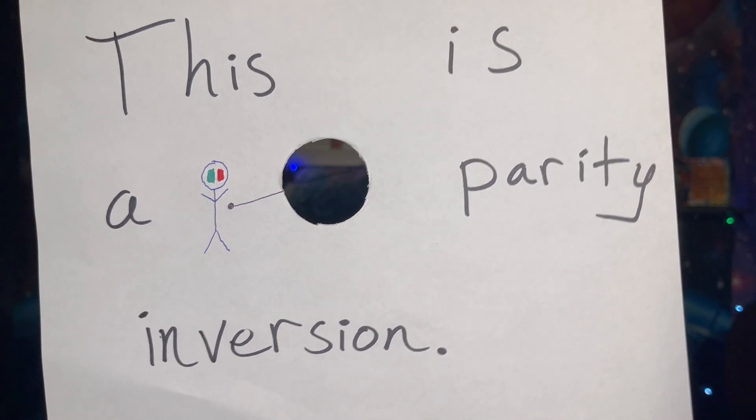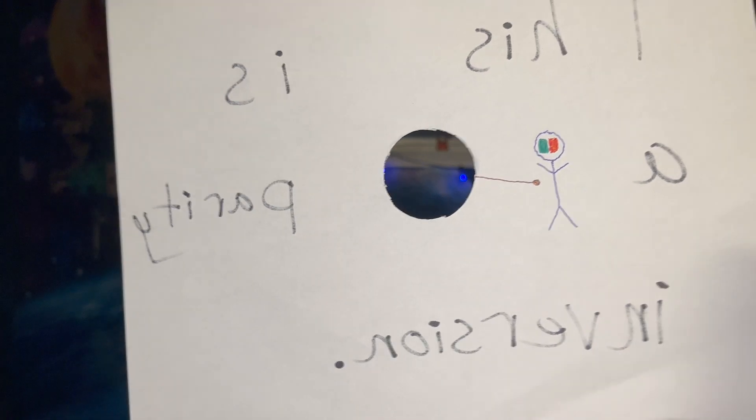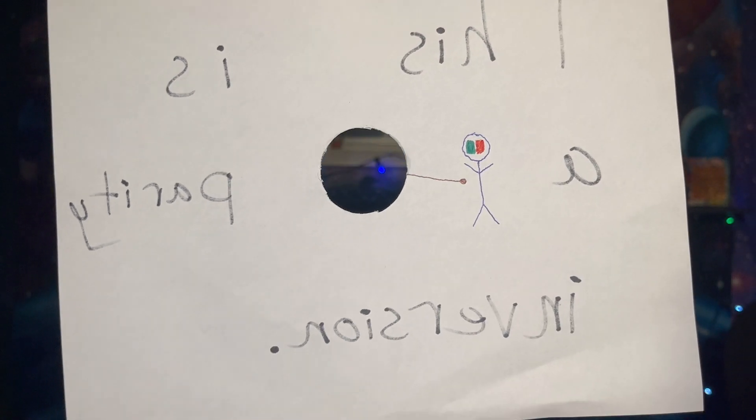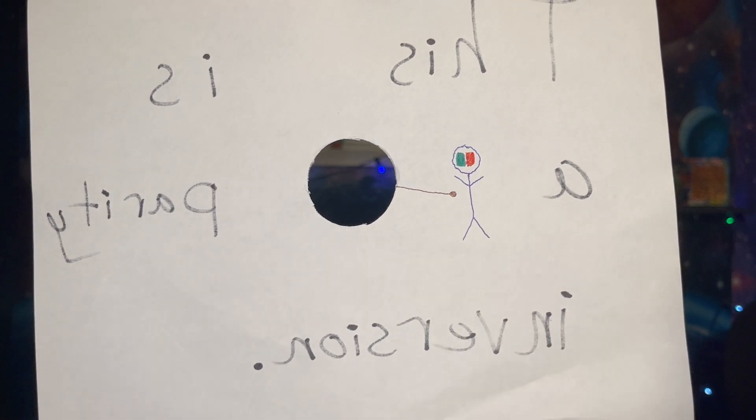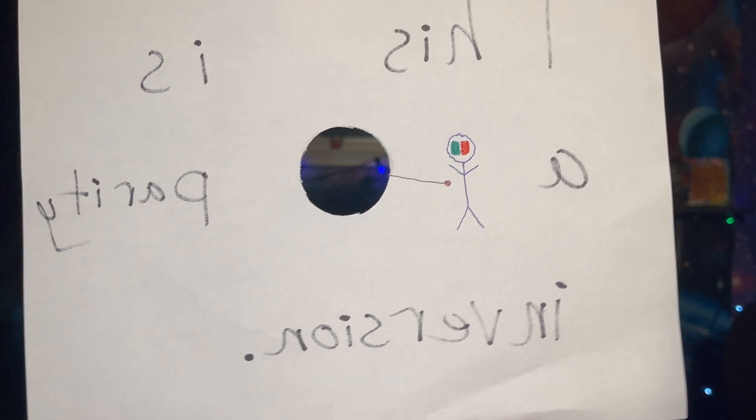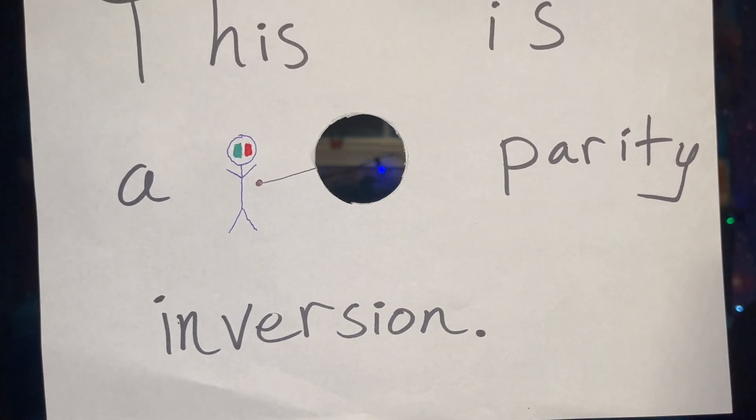If this two-dimensional observer's path takes them through the hole to the other side, everything from the side they just came from is now mirrored. In technical terms, a parity inversion has occurred. Notice the A is on the right side of the observer, the red eye. But on this side, the A is on the left side of the observer, the green eye.